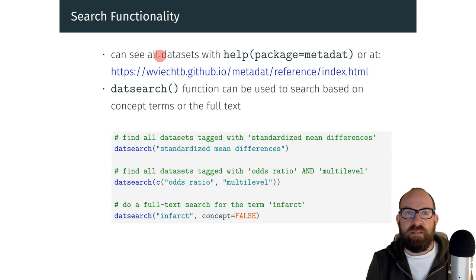If you just want to get a listing of all of the datasets included in the package, you can use this R command or you can look at the listing online. In addition, the package includes a function, the dat.search function, which allows you to search through the datasets based on their concept terms or even based on a full-text search of the help files. By default, dat.search searches based on the concept terms. So here we would find all the datasets tagged with standardized mean differences. We can also search based on multiple terms or do a full-text search if we set concept equal to false.